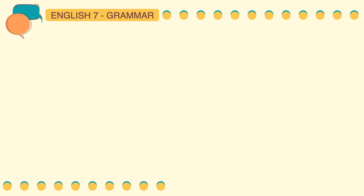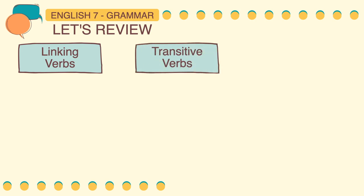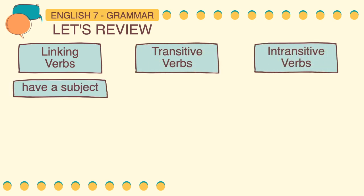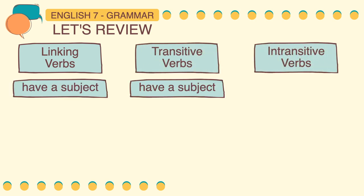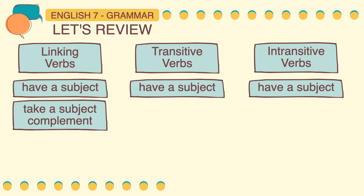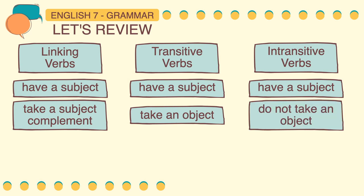Let's now proceed with a review on the types of verbs: linking verbs, transitive verbs, and intransitive verbs. All of these verbs have a subject. Linking verbs take a subject complement. Transitive verbs take an object to complete their thought. While intransitive verbs do not take an object to complete their thought.